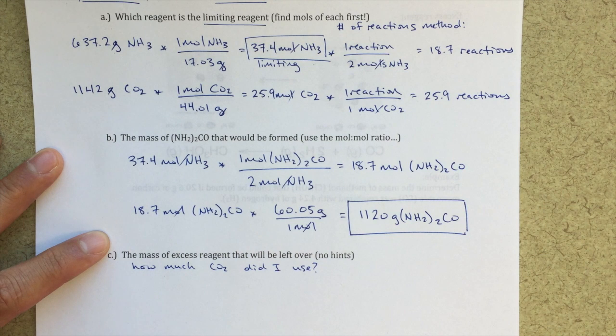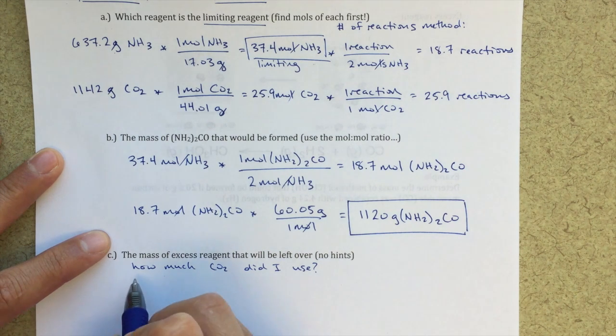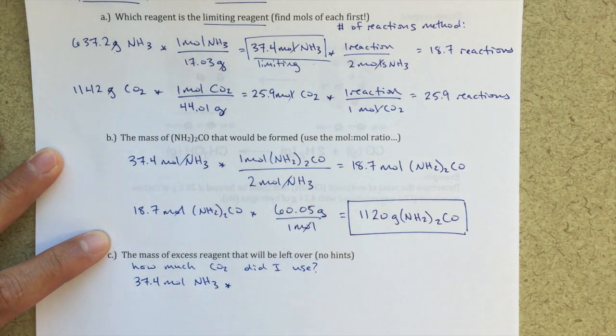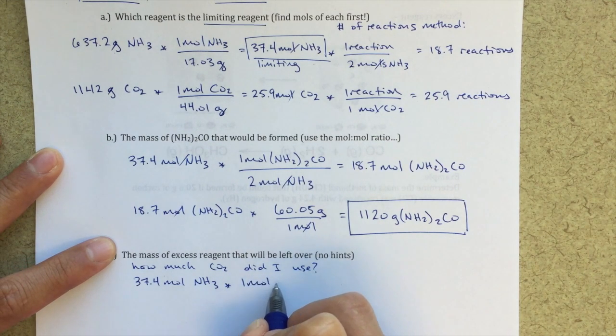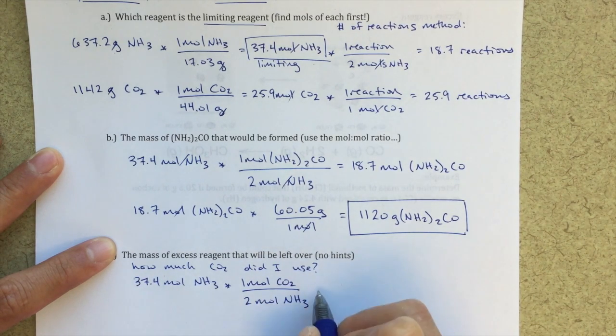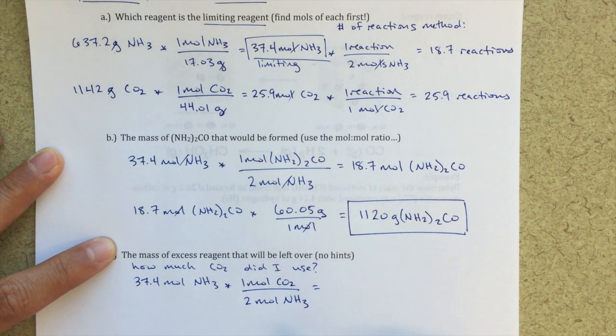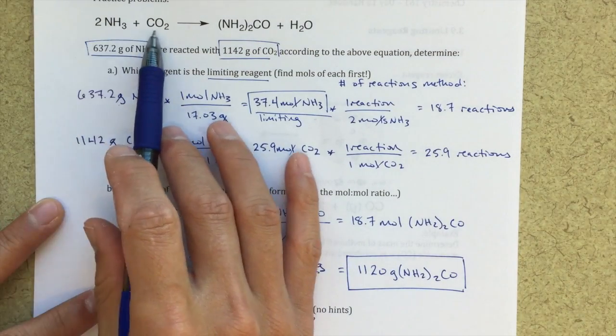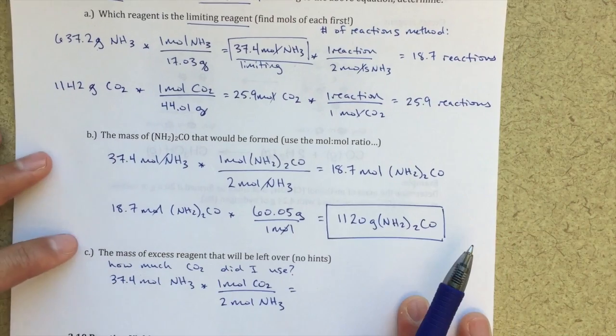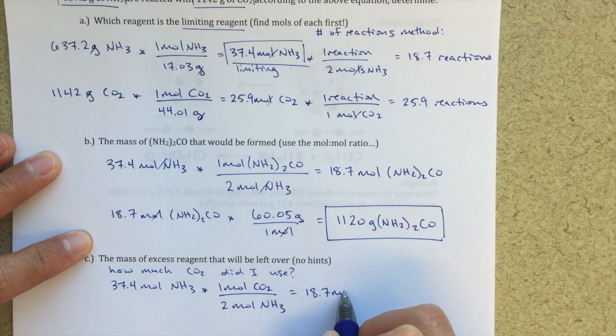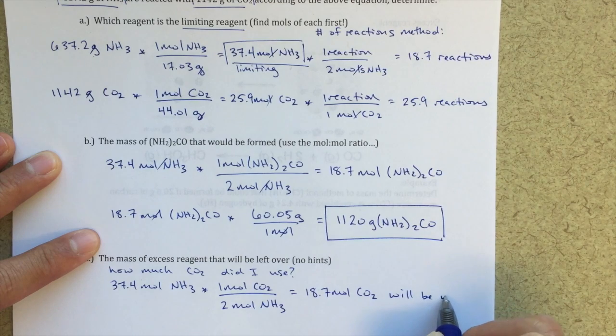So if I take 37.4 moles of NH3 and I multiply that by my mole ratio of one mole CO2 over two moles of NH3, that's going to be able to tell me how many moles of CO2 I used in this reaction. So this is my limiting reagent, moles of NH3. My mole-to-mole ratio, for every two moles of NH3, it takes one mole of CO2. So my mole-to-mole ratio here of one to two, that comes from my balanced chemical equation. So this tells me I'm going to use 18.7 moles of CO2.